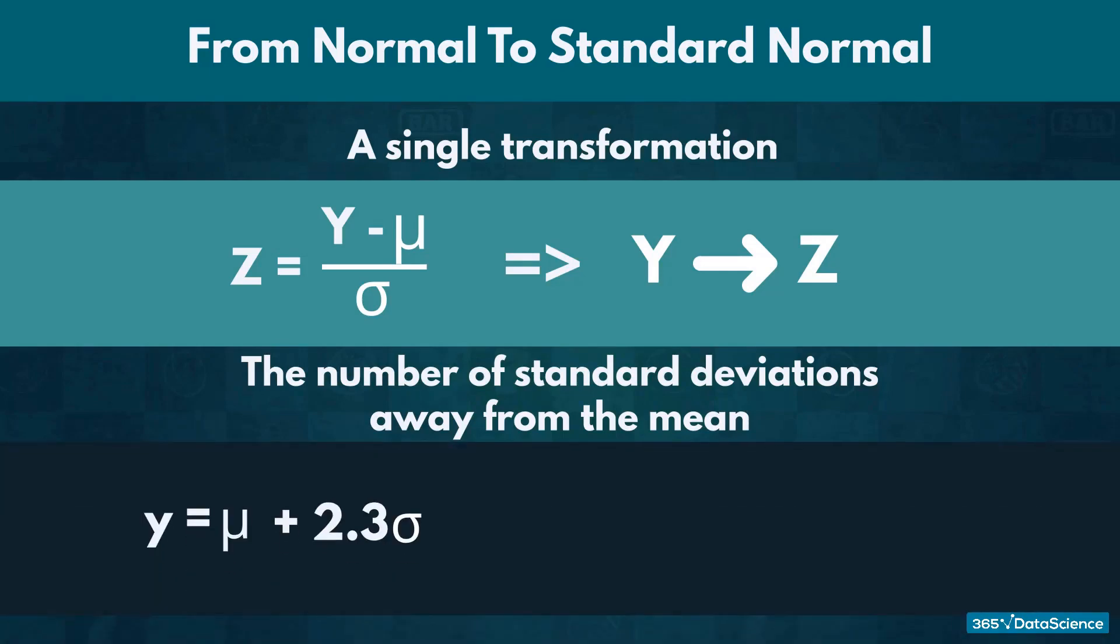For instance, if a value Y is 2.3 standard deviations away from the mean, its equivalent value Z would be equal to 2.3.